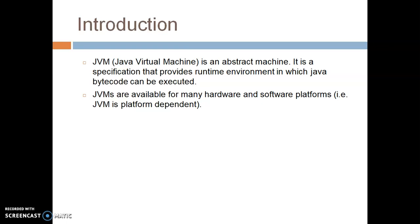Now, about the JVM — what is JVM, or Introduction to JVM. JVM is nothing but it is a Java Virtual Machine. Why is it called virtual? It is not physically existing, but we are creating an environment like an actual machine. So it is an abstract machine. It is a specification that provides a runtime environment in which Java bytecode can be executed.